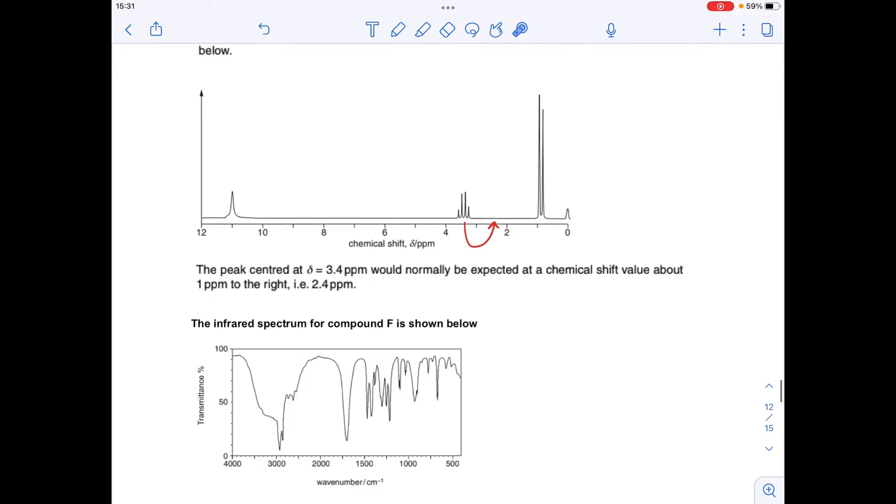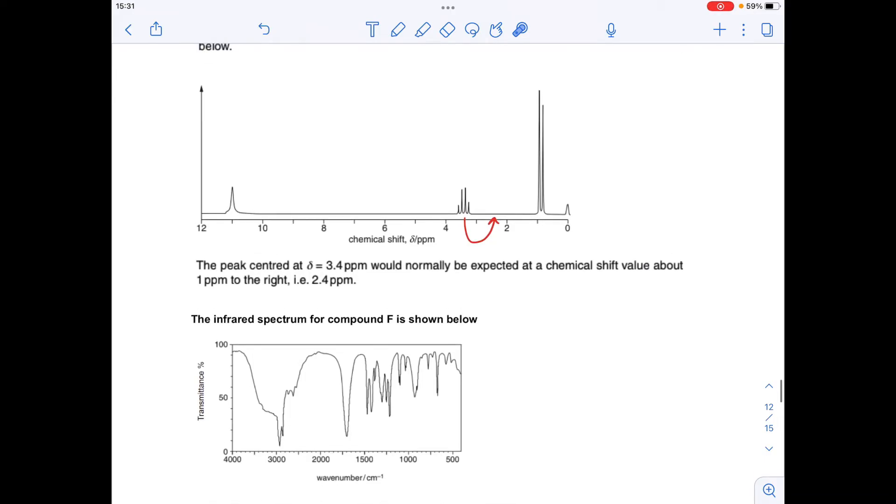Right, so we'll start with the infrared spectrum. We've got the classic absorptions here for a carboxylic acid. I'll just label those up. That's a C double bond O, and this broad absorption is an OH of a carboxylic acid. So we can safely say that F is a carboxylic acid.